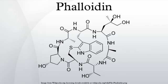Phalloidin belongs to a class of toxins called phallotoxins, which are found in the death cap mushroom. It is a rigid bicyclic heptapeptide that is lethal after a few days when injected into the bloodstream. The major symptom of phalloidin poisoning is acute hunger due to the destruction of liver cells.